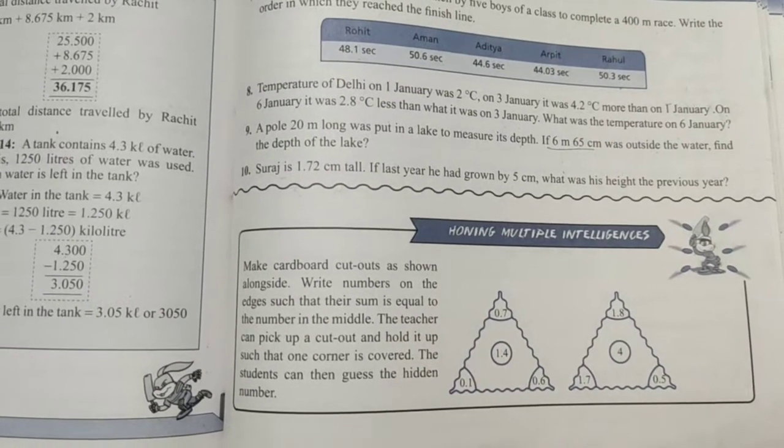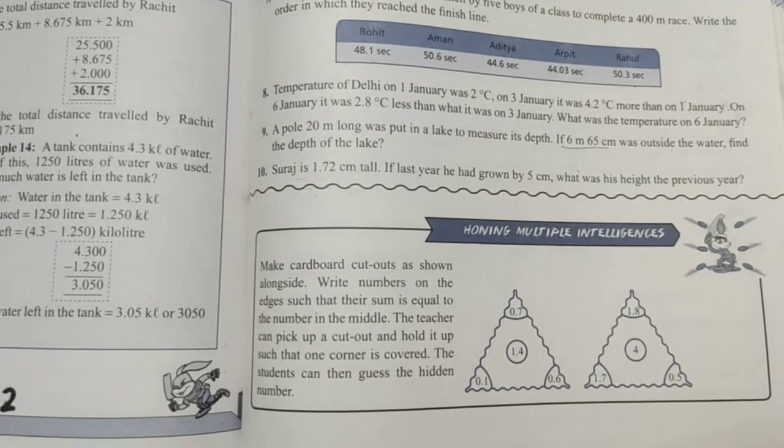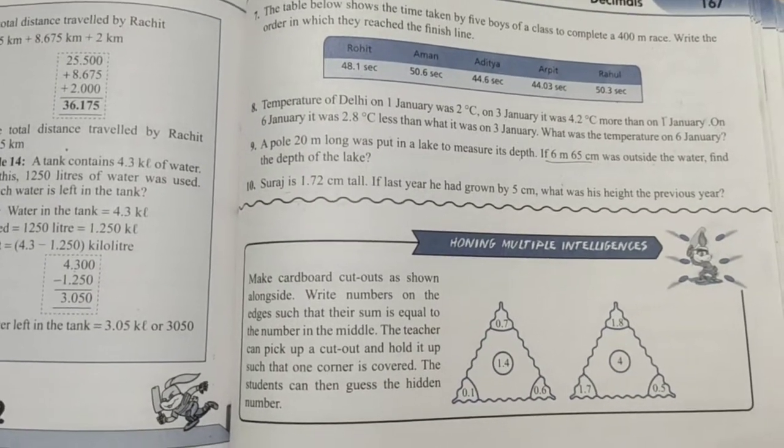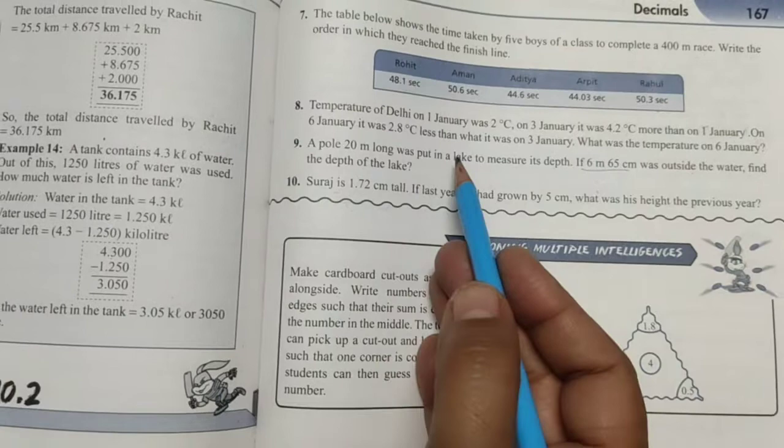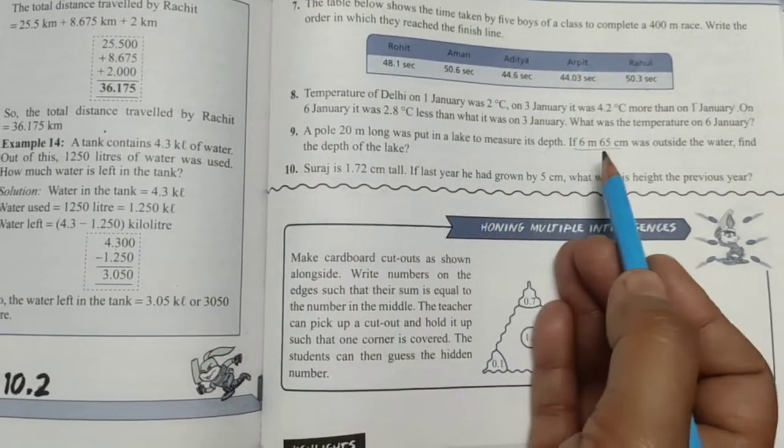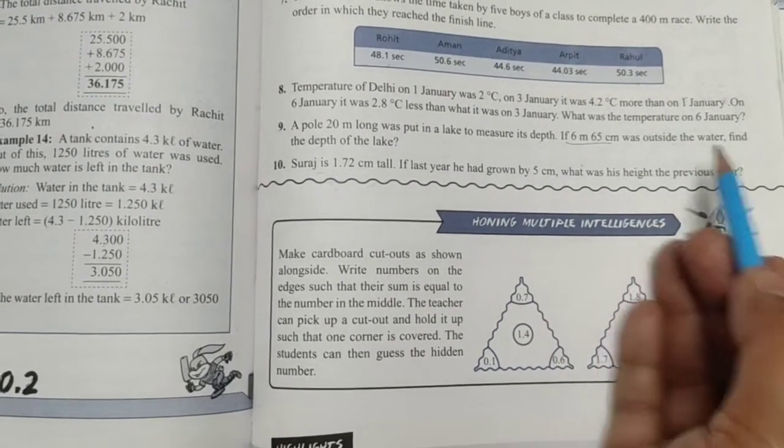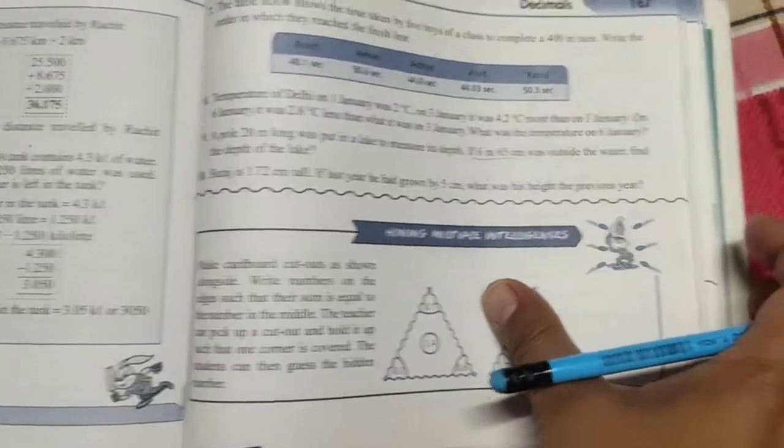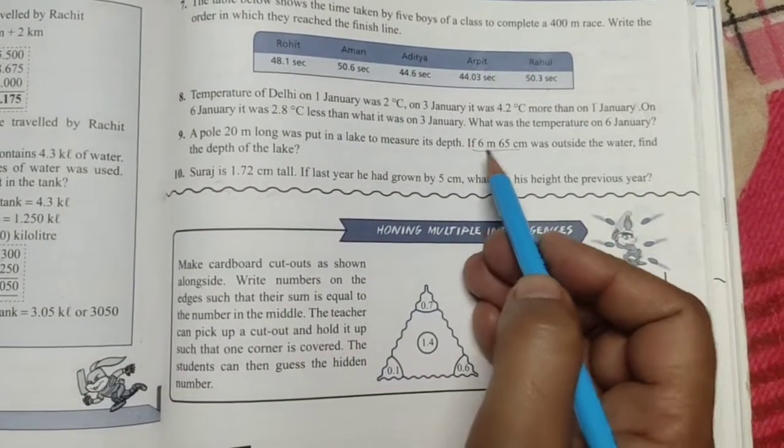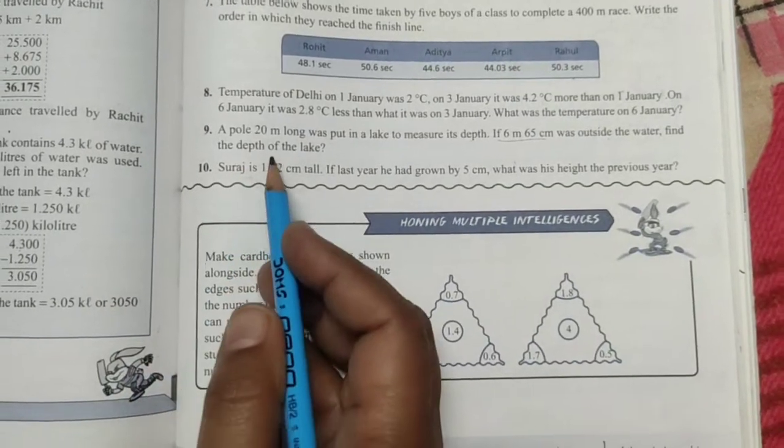Okay, question number 9. A pole 20 meters long was put in a lake to measure its depth. A pole is where we have put it in the lake and the length of the pole is 20 meters. If 6 meters 65 centimeters was outside the water, means that the pole is 6 meters 65 centimeters outside the water, find the depth of the lake.